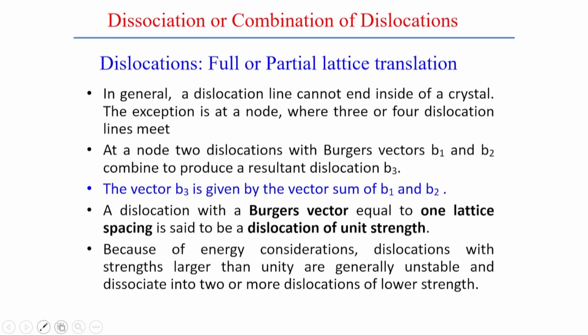We will discuss the dissociation or combination of dislocations. This is significant to understand the energy level associated with a dislocation—whether one full dislocation can be dissociated into two small dislocations, or two partial dislocations can be associated to form another dislocation. Today's teaching will focus on the basic concepts of different types of dislocation interaction.